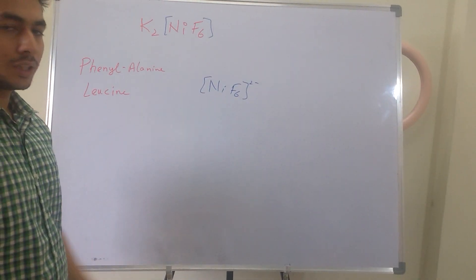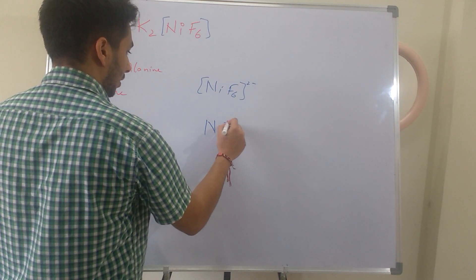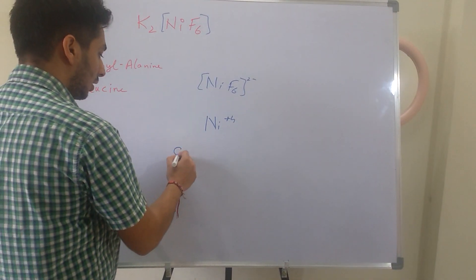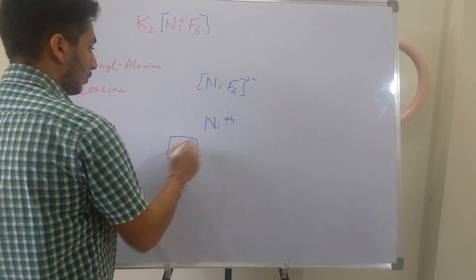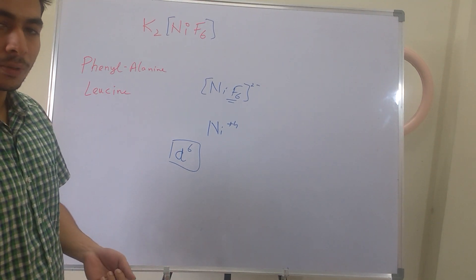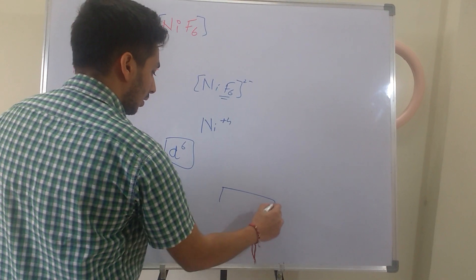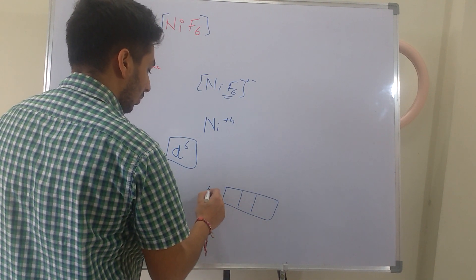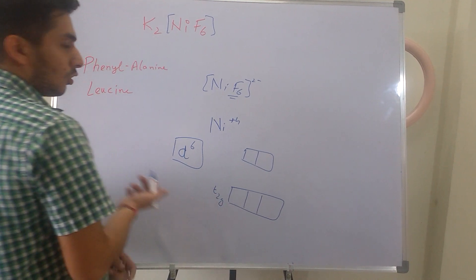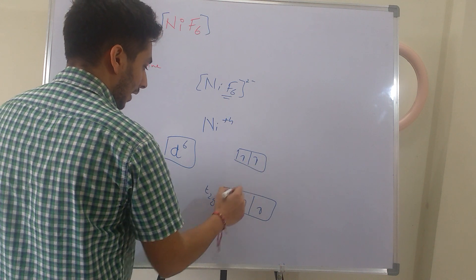If you calculate the oxidation state of nickel in this case, it comes out to be +4. Nickel has a configuration of d⁸4s², so in the +4 oxidation state it will exist as d⁶. Fluorine is a weak-field ligand, so it will not lead to pairing. If we draw the octahedral complex with T₂g and Eg levels, 6 electrons are distributed as: 1, 2, 3, 4, 5, and 6.